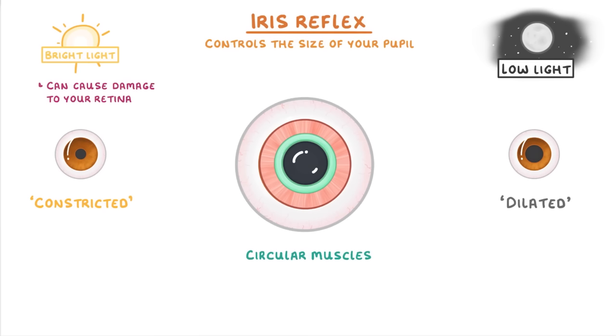And then around the outside are the radial muscles. And you can remember that they're called radial muscles because they stretch from the inside to the outside, like the radius of a circle.